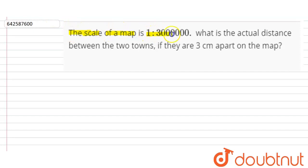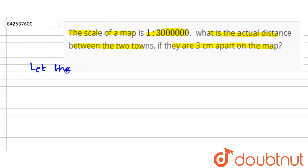Hello friends. The question is: the scale of a map is 1 is to 30 lakh. What is the actual distance between the two towns if they are 3 centimeters apart on the map? We have to find the actual distance between the two towns.